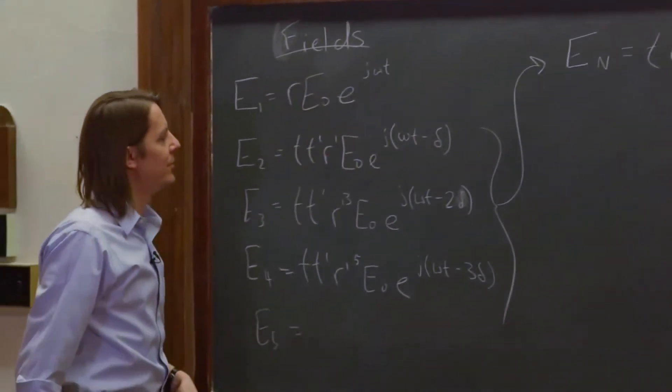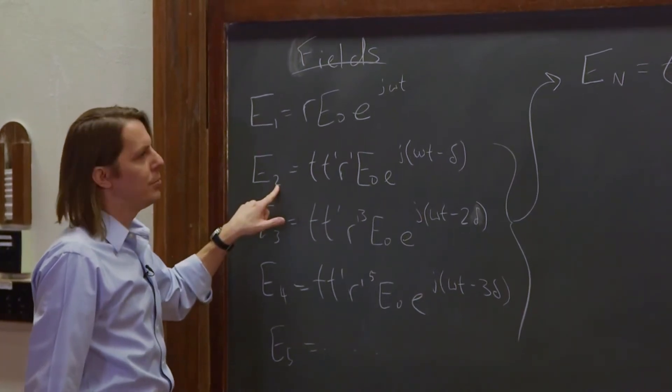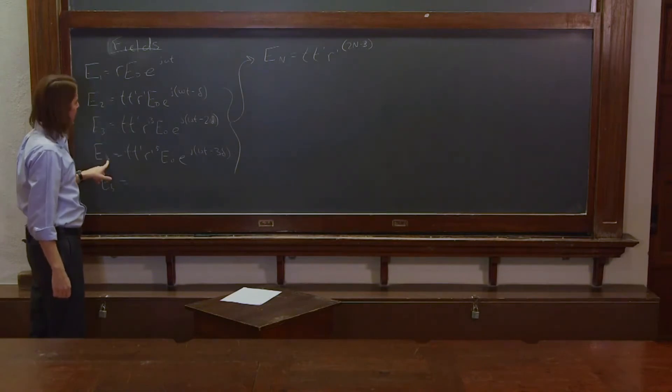It's going up doubled, so you have to have 2n and you have to have minus three because you're so far behind. So two times two is four, minus three is one. Three times two is six, minus three is three. Four times two is eight, minus three is five.